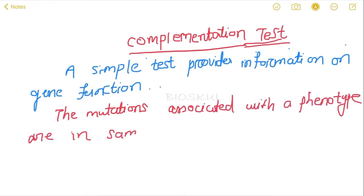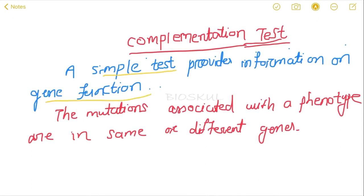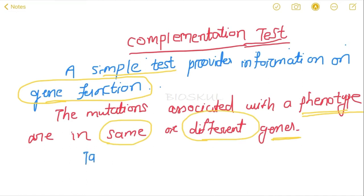For a particular phenotype, a genotype is always associated. Complementation is a simple test that provides information about gene function — that means whether the mutations associated with the phenotypes are present in the same genes or in different genes. Let me explain this with an example.